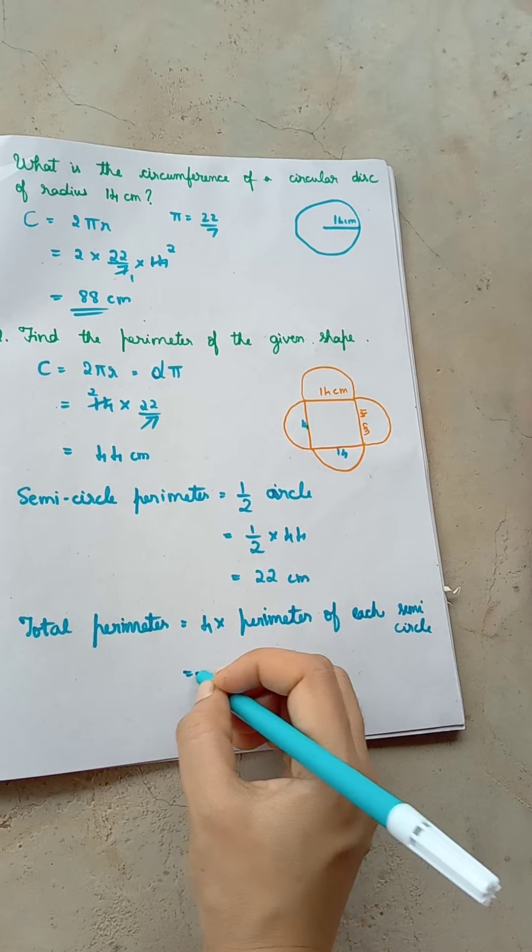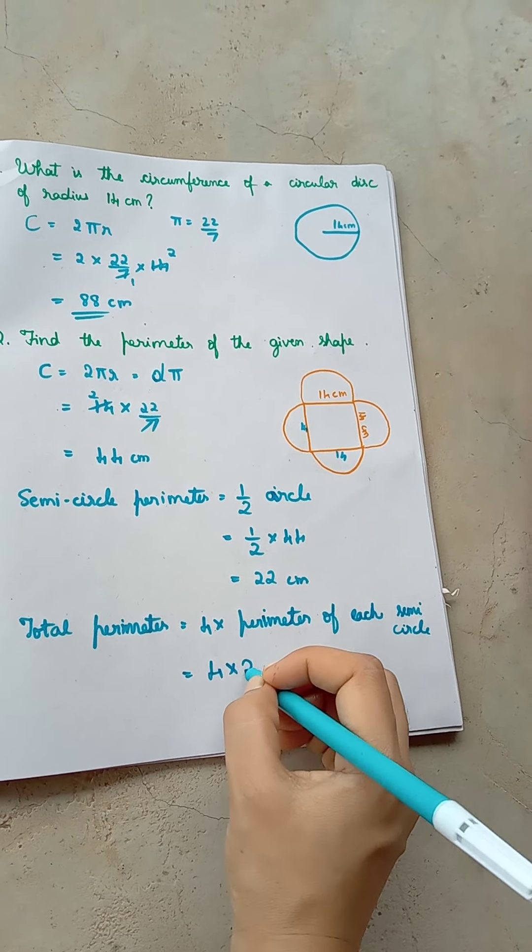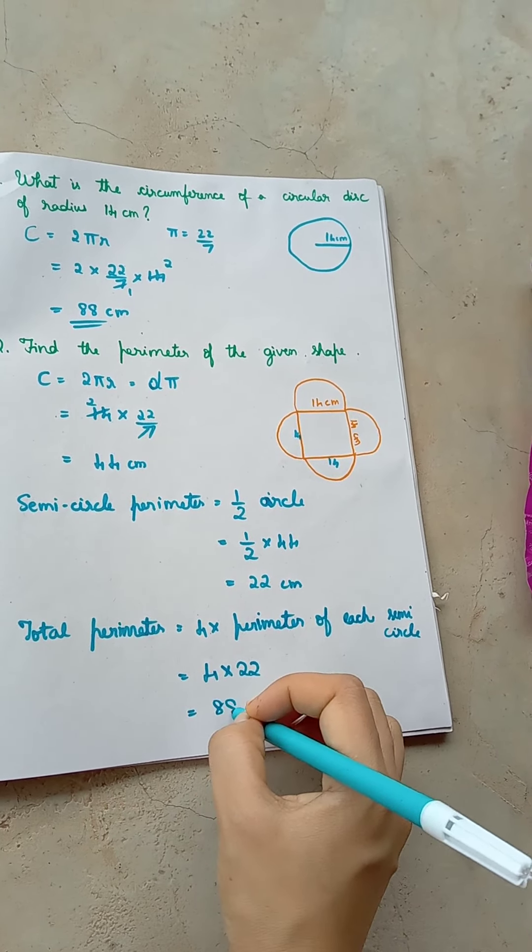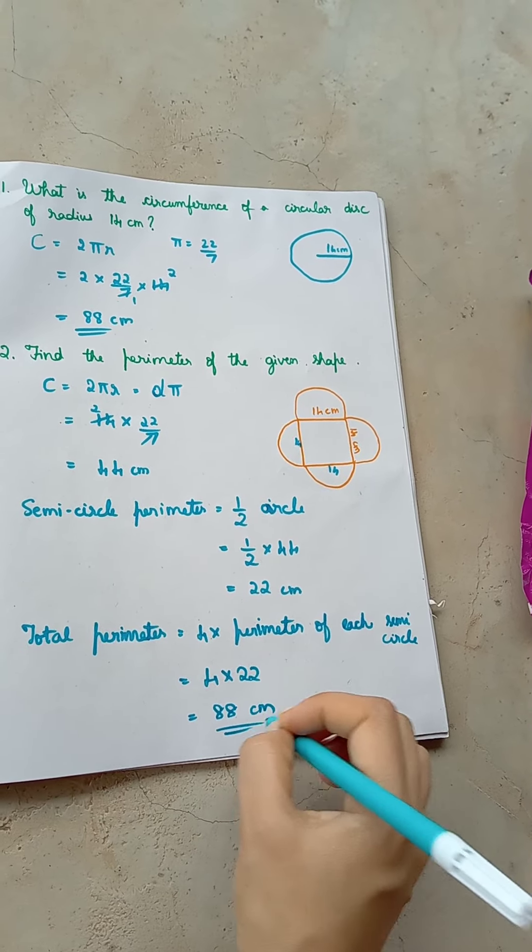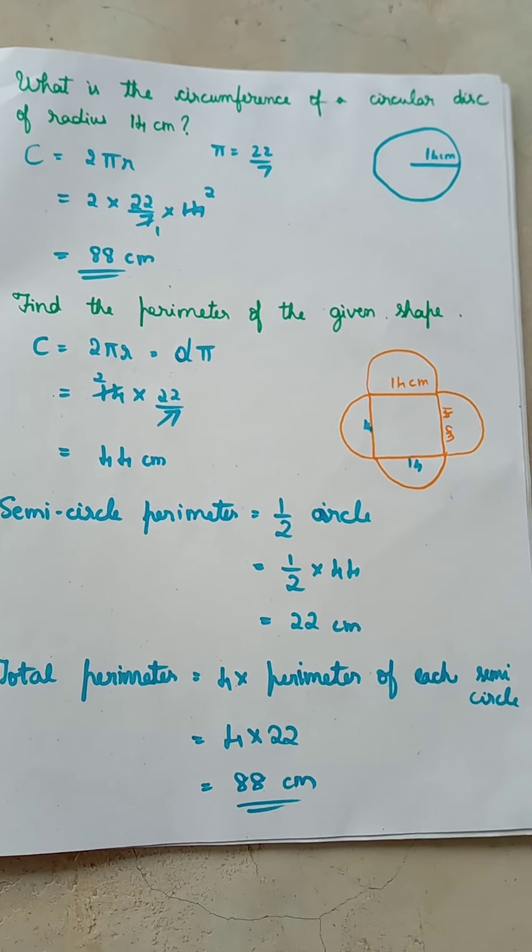Which is 4 into 22, equals 88 centimeter. Thank you.